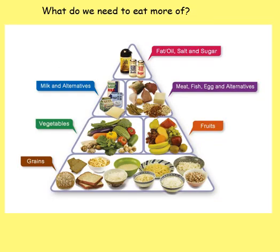I wonder what answers you came up with. At the very bottom, perhaps surprisingly, is grains — carbohydrates — because that's where we get our energy from. Moving up we've got vegetables and fruits. There's slightly more vegetables than fruits, but as long as you have the recommended five portions that should be fine. Then we've got milk and alternatives, then meat, fish, eggs and other protein alternatives, and at the very top a small amount of fats, oils, salts and sugars.